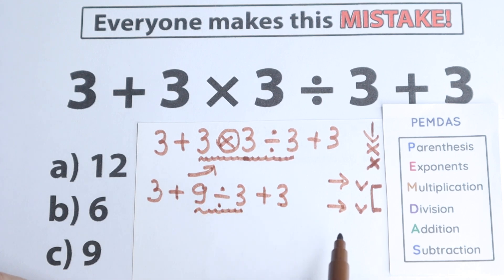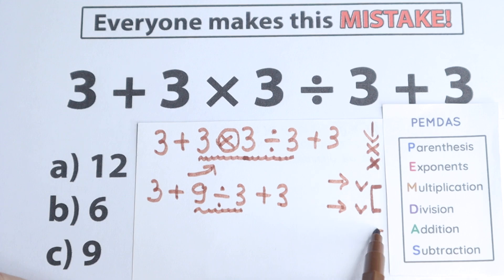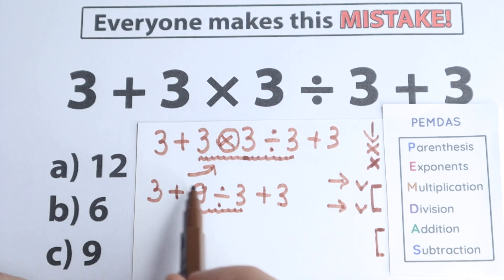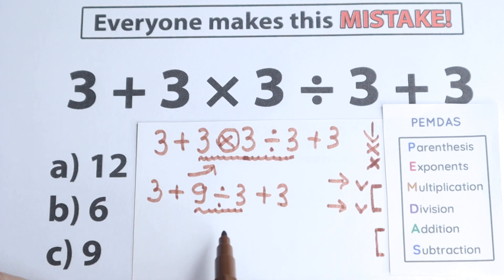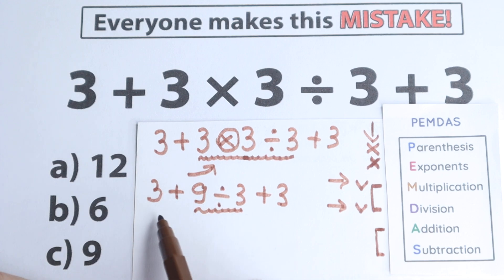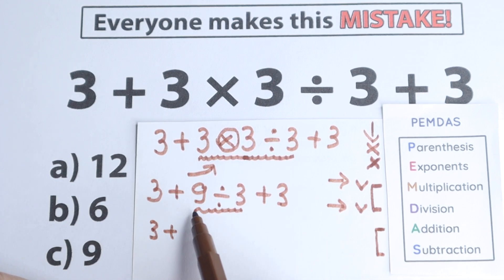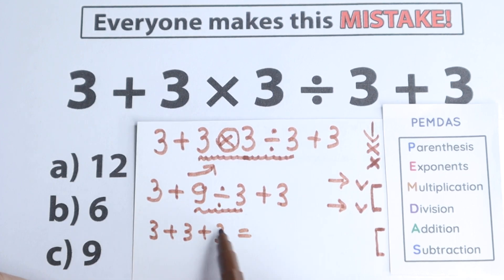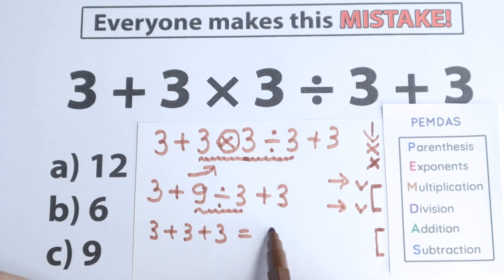Addition and subtraction come after multiplication and division. So we divide and multiply first — whichever sign comes first from left to right — then we add and subtract. In our case, 9 divided by 3 is 3, so we have 3 plus 3 plus 3. Three plus 3 plus 3 equals 9, which is option C. That is my answer to this question.